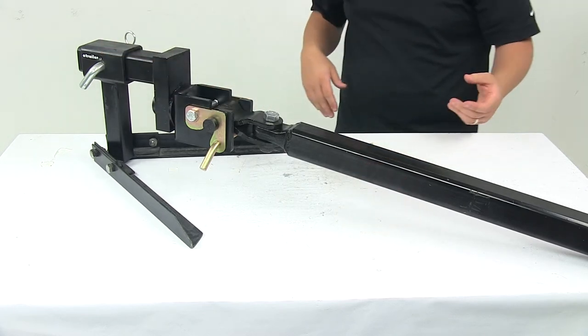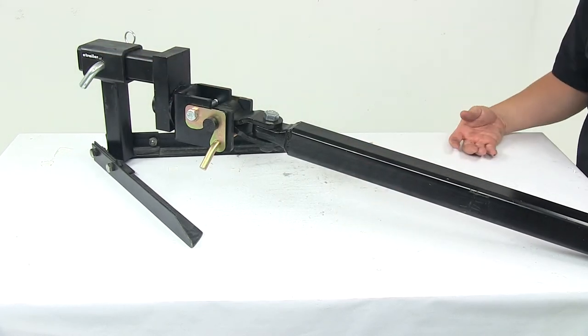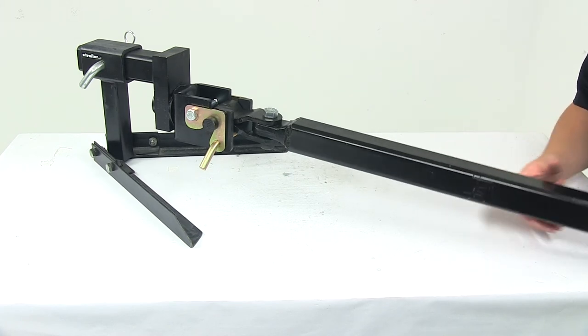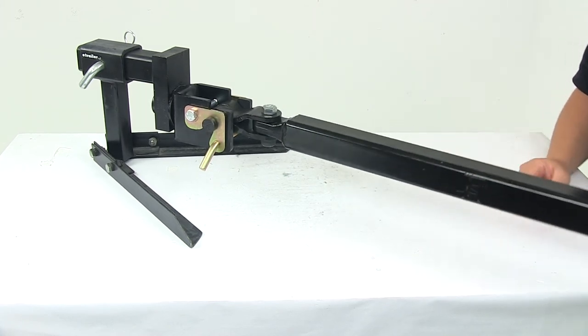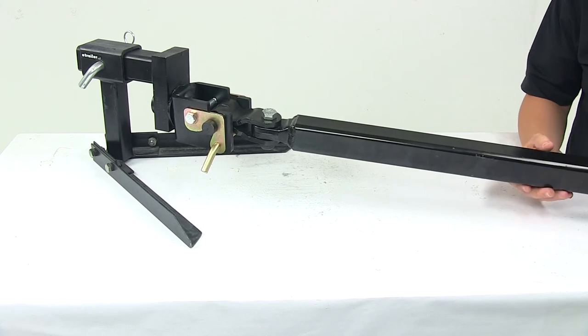When coupled, you have 360 degree rotation and three axes of movement at the connection point. So you can see on the trailer side how we can pivot back and forth, really no stress.